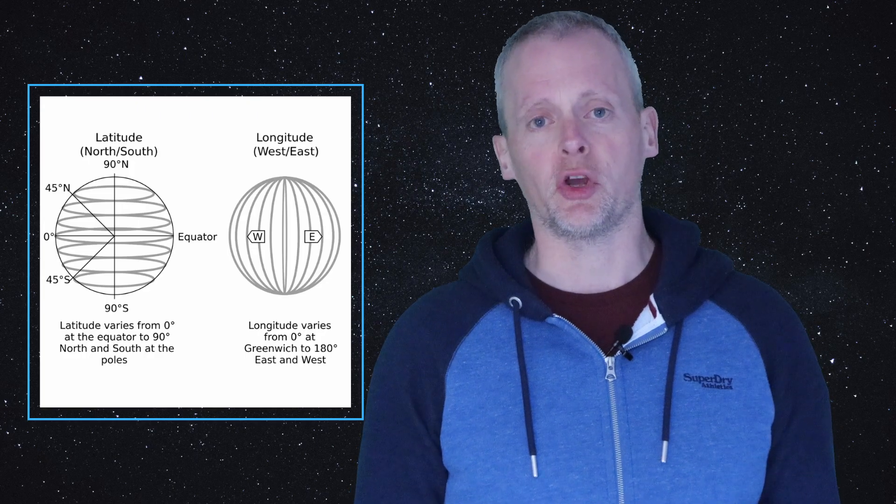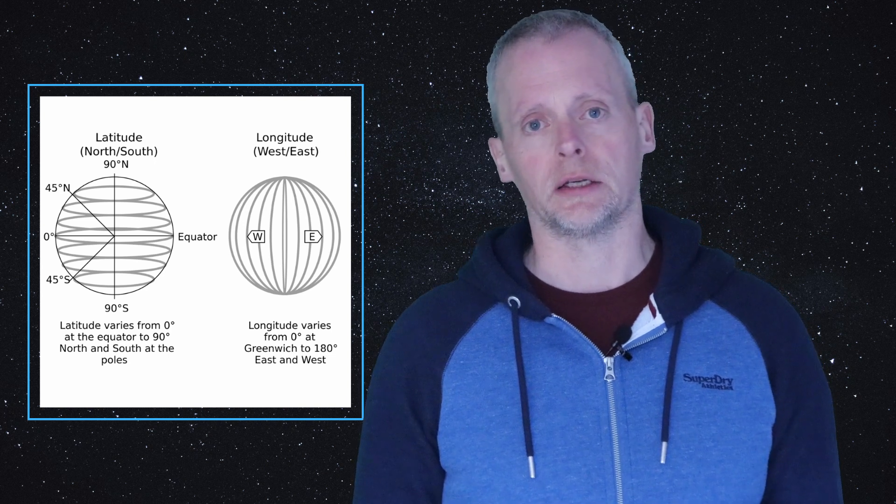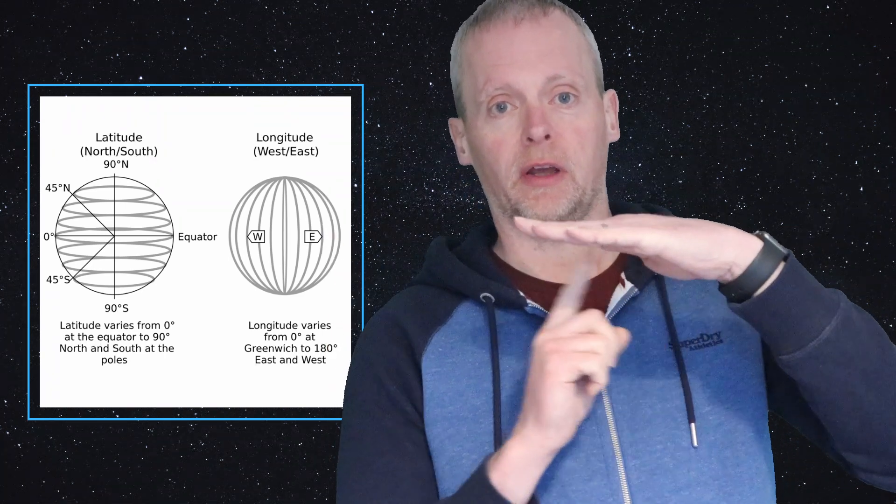We have a coordinate system on Earth, and it's formed with lines of latitude and lines of longitude. Lines of latitude run parallel to the Earth's equator, so they go around the Earth this way and form concentric circles north and south. Lines of longitude go perpendicular to the equator and connect the north pole to the south pole. You can tell anybody precisely where you are on the Earth's surface by giving them your longitude coordinate and your latitude coordinate.